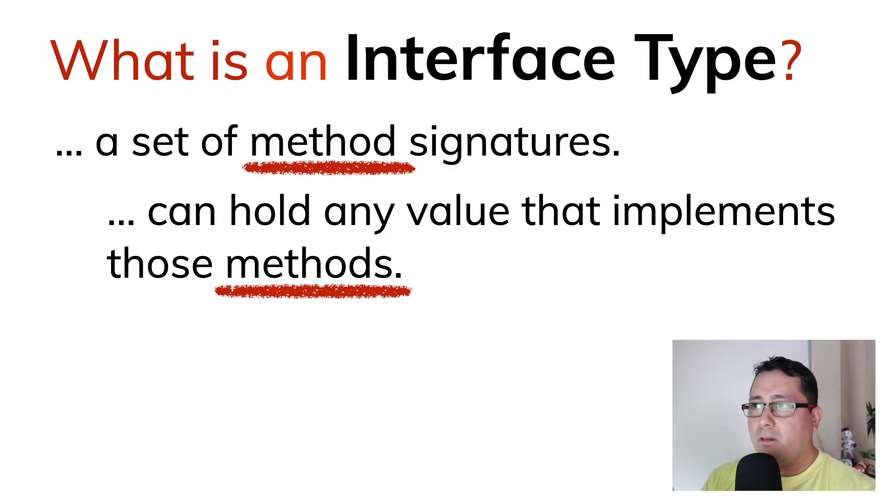So when we are talking about methods, we need to define a type. So you cannot use interfaces with functions only. You need to implement a type that happens to be implementing those methods in order to define an interface.